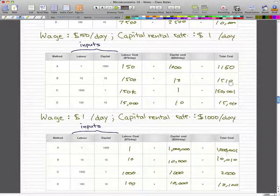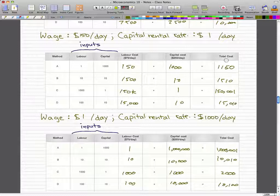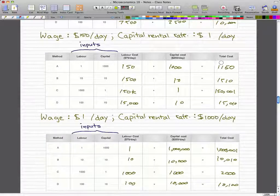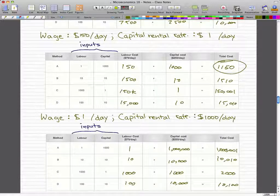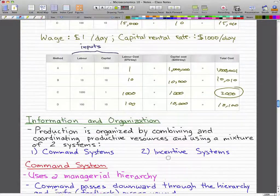And a hundred times one is a hundred, a thousand times ten equals ten thousand which gives us ten thousand one hundred. So we can see that in both this part and this part the lowest cost would be A here and this will be the most economically efficient method. And for this part it's 2000, that'll be the most economically efficient method.